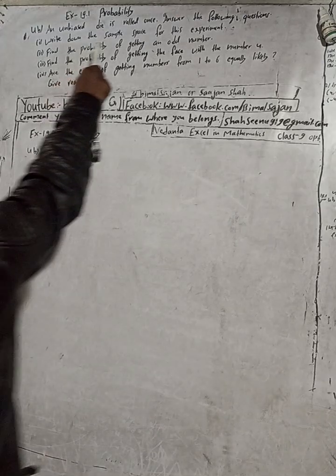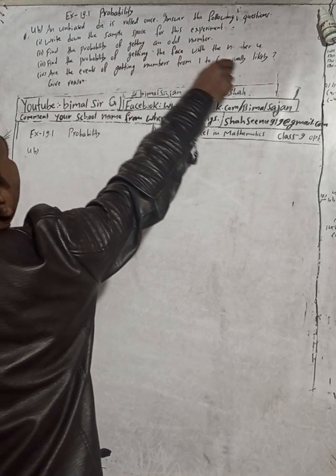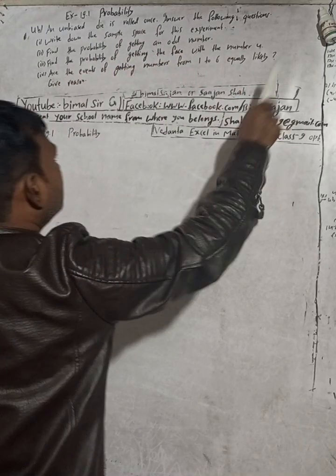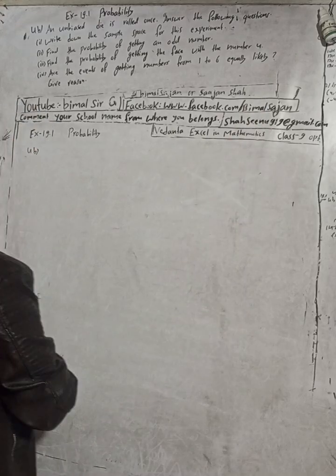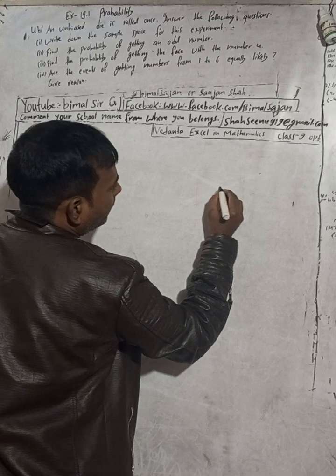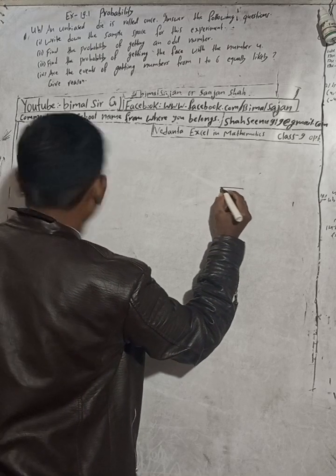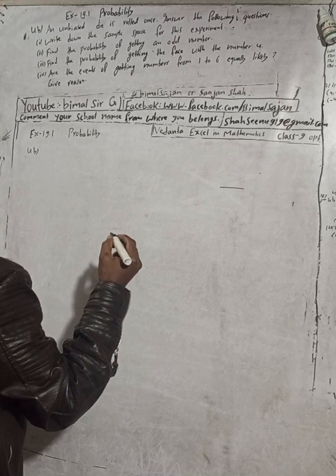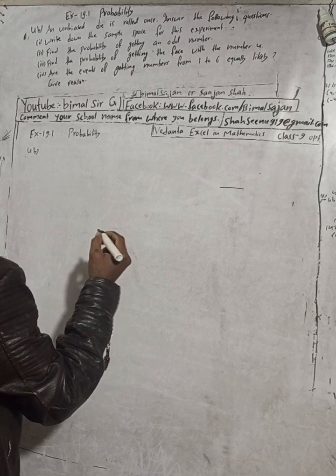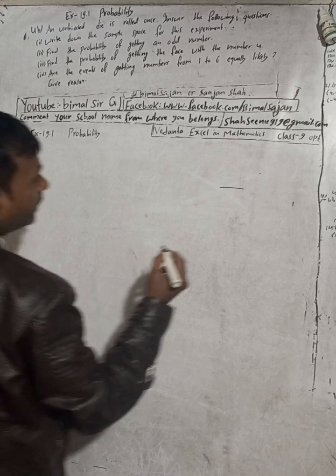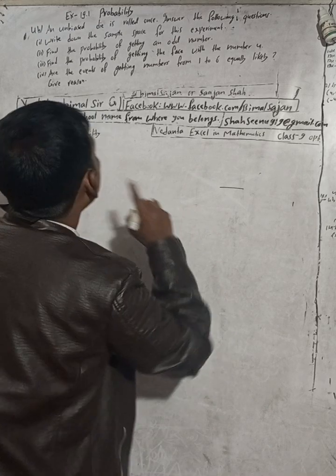The question is 4B: an unbiased die is rolled once. Answer the following questions. Write down the sample space for this experiment.